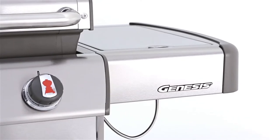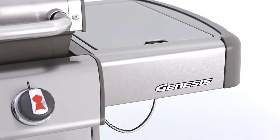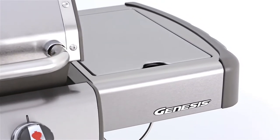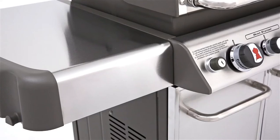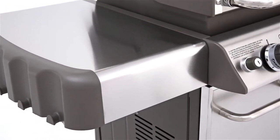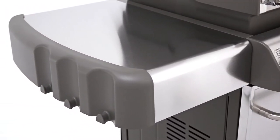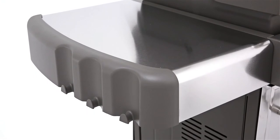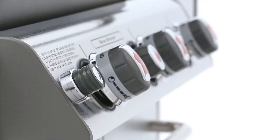For food preparation and handy entree plating, Genesis gas barbecues have large stainless steel work surfaces that flank both sides of the barbecue. The side tables are finished with painted cast aluminum end caps and feature six integrated tool hooks.